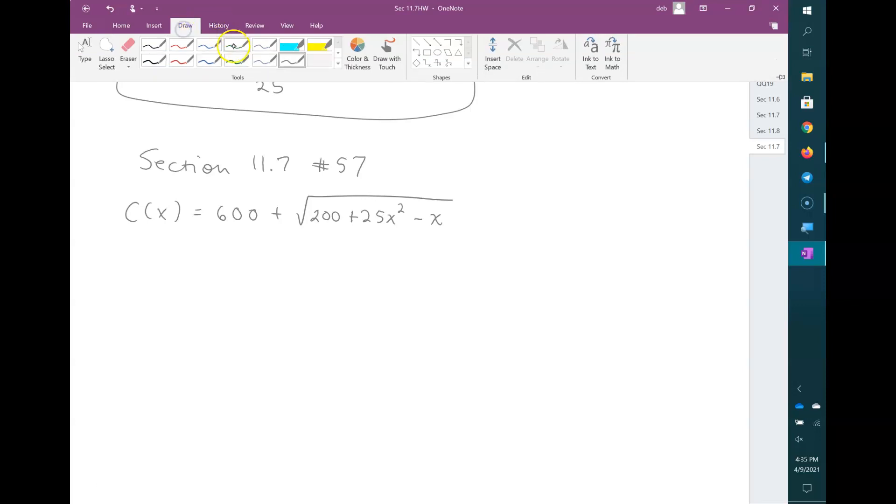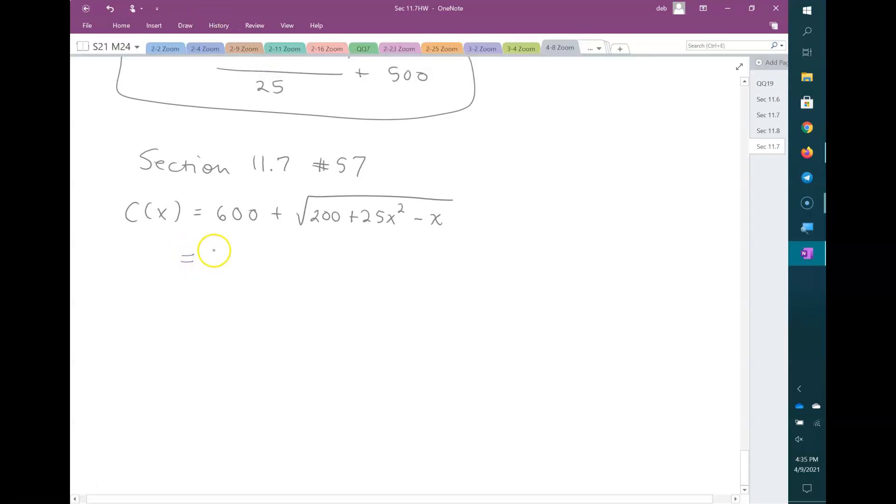Well, because I know I'm going to be asked to do calculus on this, I'm going to rewrite this as 600 plus 200 plus 25x squared minus x to the power of 1 half, so that I can use my rules.